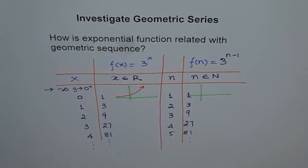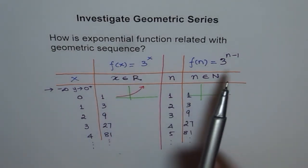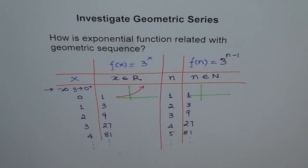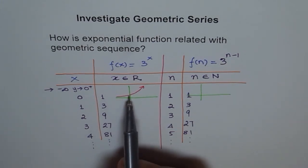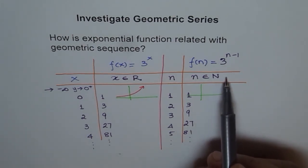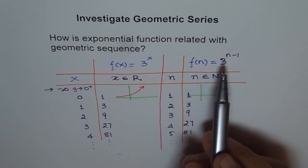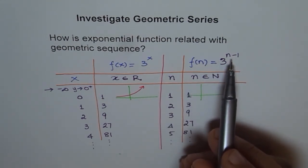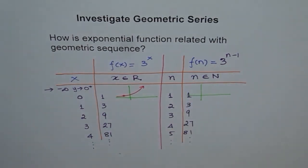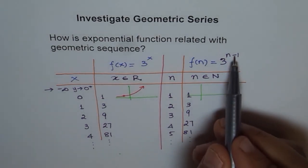We can actually get the same, if we restrict the domain to natural numbers, then general term, or the formula, or the function, could be related if I write the exponent as less 1. Less 1, why? Because I am taking care of the value at 0. Only because natural number starts with 1, I couldn't have taken care of 0, so I started with n minus 1. But now, think about it. Can I take care of this value also?